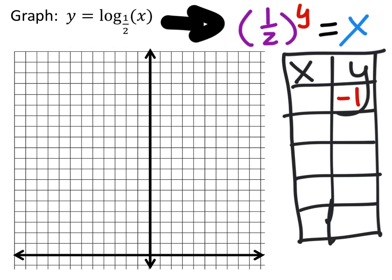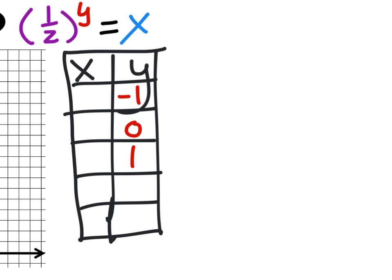So I'm going to first use these three values: -1, 0, and 1, and see where that gets us. So using y is -1, I would have (1/2)^y, which is -1, and that will equal my x.